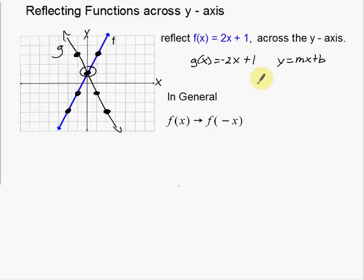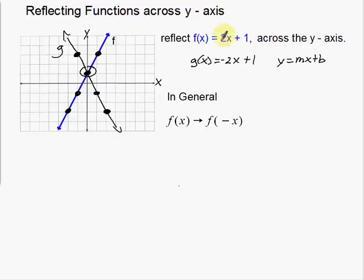Now that I have the equation for this new line, let's compare it to the old one. The y-intercepts didn't change at all. But notice: 2 and negative 2 — the slopes are just opposites of one another. I went from 2 to negative 2. In general, if I want to reflect a function across the y-axis, all I need to do is change the sign on the x — just take a negative x. That's what this is: to reflect across the y-axis, change the sign on the x.